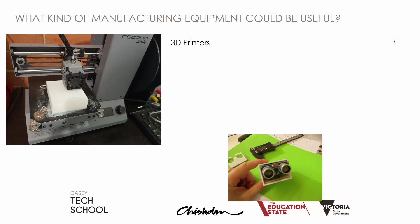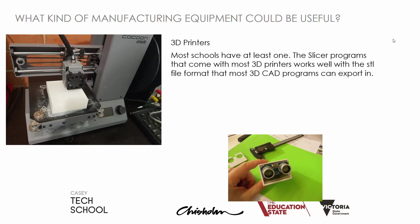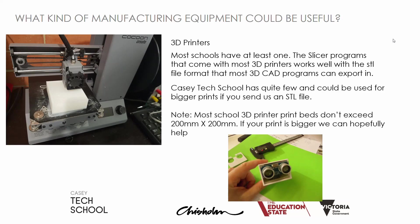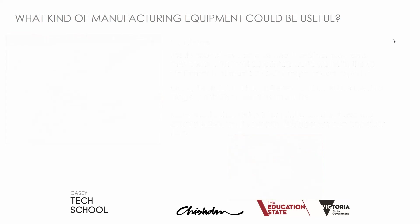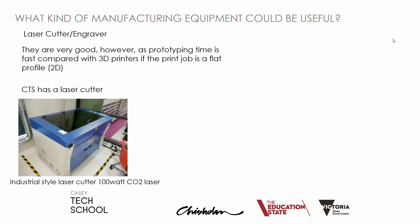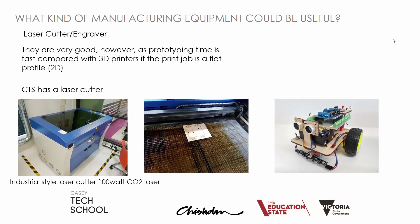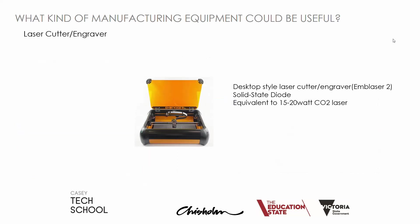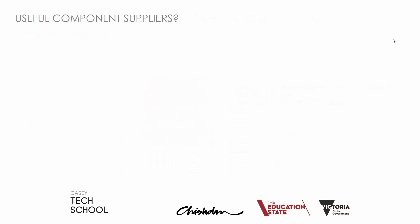For manufacturing equipment, 3D printers — your school should have at least one, but Casey Tech School has larger ones if you need a bigger print bed. Laser cutters are also great for fast prototyping. We have an industrial-style one here at Casey Tech School — you can send us some designs and we can cut them for you. Some schools have smaller ones, such as the Emblaser 2, which are also useful.